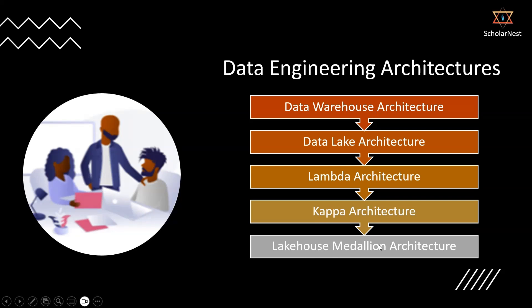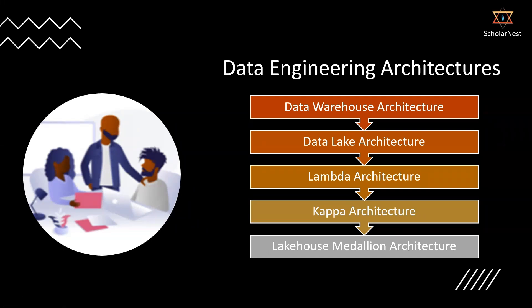That's about the evolution of the different kinds of data architectures. We will slowly understand these architectures, their differences, and their limitations. You should understand that it started with the data warehouse architecture and evolved over a period of time to cover different requirements and overcome limitations. The most recent one is the lakehouse medallion architecture, and that's what we will mostly focus on during the entire course — how we build applications following this lakehouse medallion architecture for designing and developing modern data engineering applications.